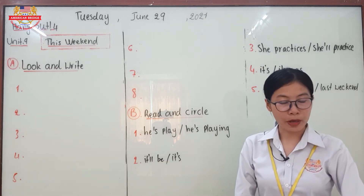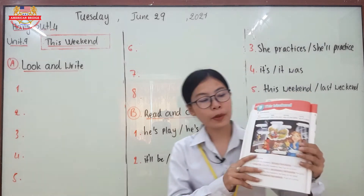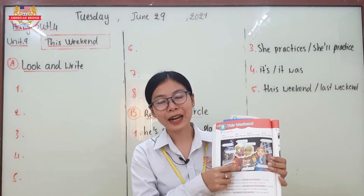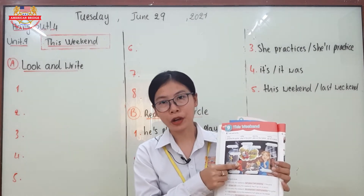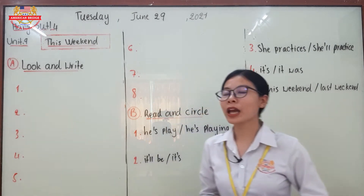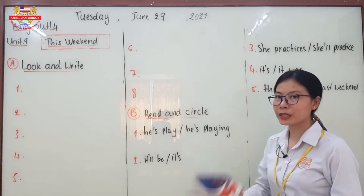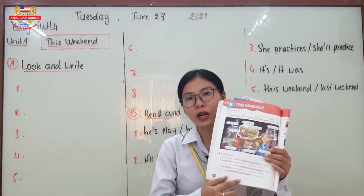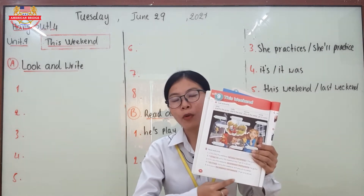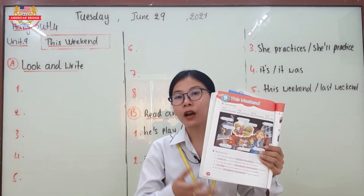In part A, Look and Write, you have to look at the picture and then write the word that describes the picture or matches with it. Then you can go to part B, Read and Circle. You have to read the sentence carefully in order to circle the correct grammar form.